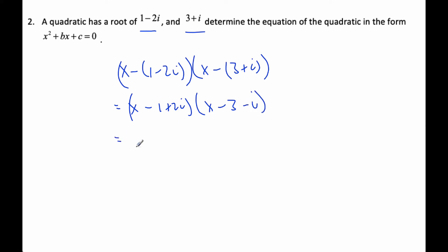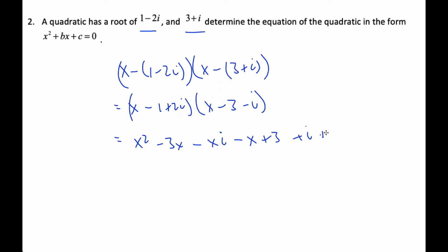Really, the only way to do this is to just brute force, plug and chug it all out. When we do that, I can go x times all of them, so I get x squared minus 3x minus xi, and then the negative 1 times all of them, so I get negative x plus 3 plus i, and then the 2i times all of them and I get plus 2ix minus 6i and then negative 2i squared.